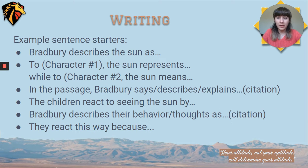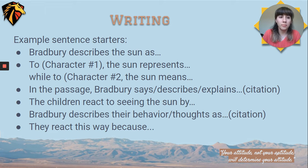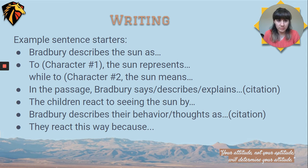To help you start those three sentences, I have a bunch of sentence starters. The first three are for question number one, and the second set of three is for question number two. For question 1: 'Bradbury describes the sun as...' — you'll clearly answer how Bradbury describes the sun. The way the question is worded, you may actually want to use an AEC format instead of ACE: 'To [character], the sun represents [blank], while to [character 2], the sun means or represents [blank].' Then: 'In the passage, Bradbury says/describes/explains...' and include the citation. At the very end, include one sentence explaining what all that meant.